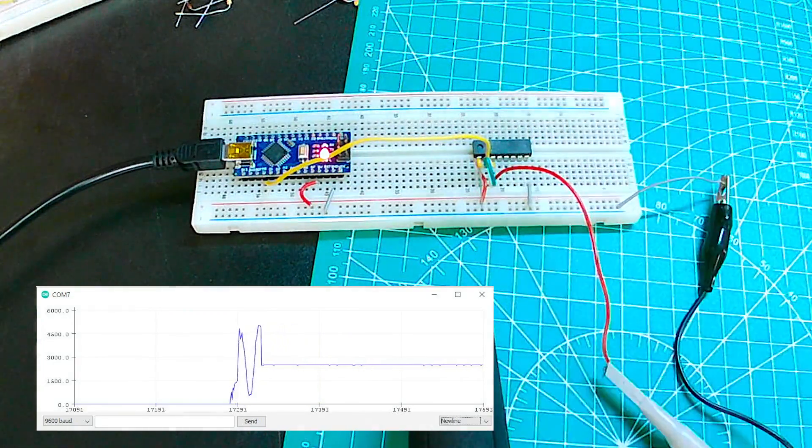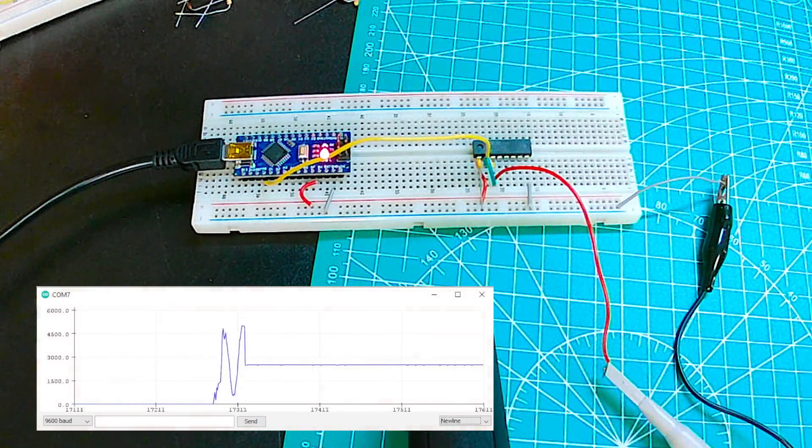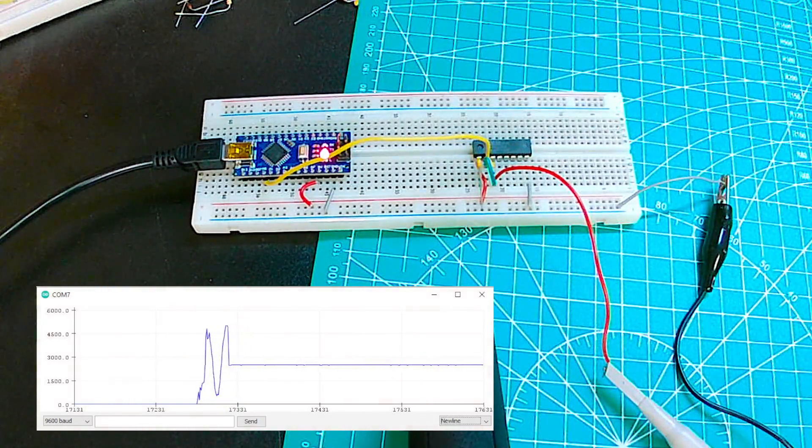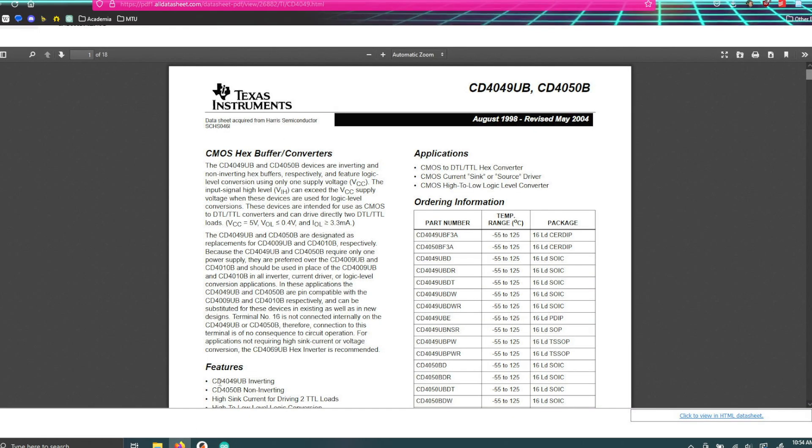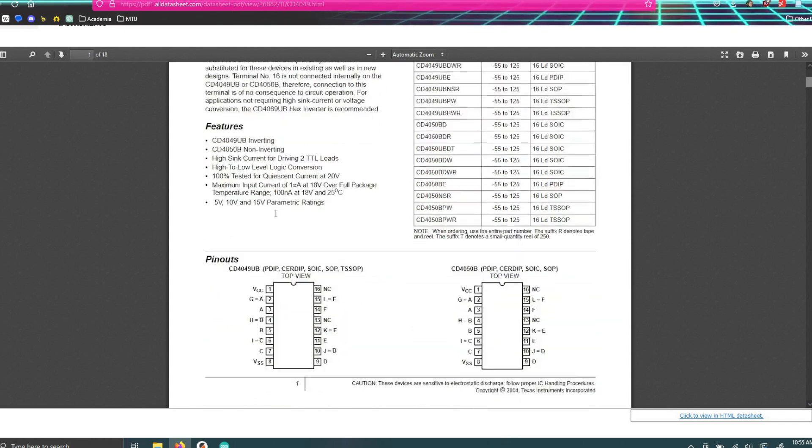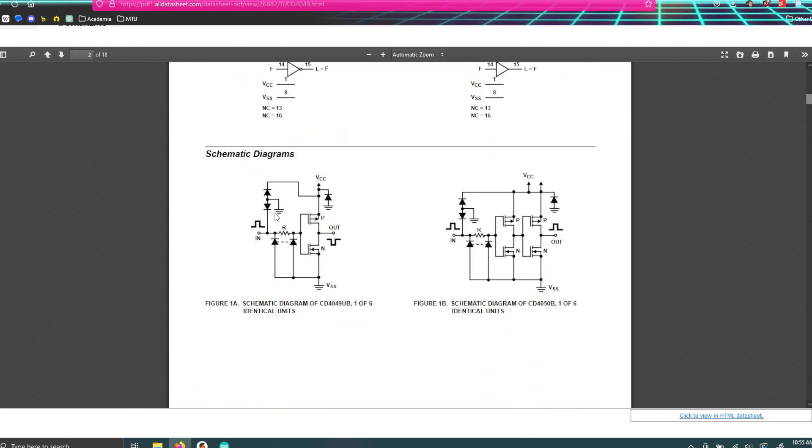So to understand why that's happening, we actually need to look at the schematic for what's inside this chip. So let me head over to our screen. Well actually we'll talk about this Arduino code in a second, but let's look at the CMOS inverter. And that's a big thing—this is CMOS, which stands for complementary metal oxide semiconductor.